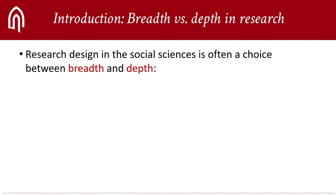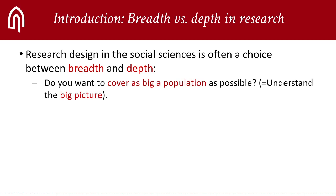A basic dilemma that a researcher in the social sciences will be confronted with when designing their research is whether to prioritize breadth or depth. Choosing breadth means that you should cover a large population and reach some conclusions about it that, while not necessarily true of each individual member, will hold true of the population in general. Your aim in doing so is to see the big picture of how things are in society without getting hung up on the minutiae and the exceptions.